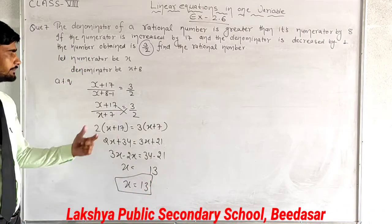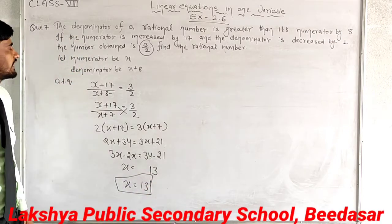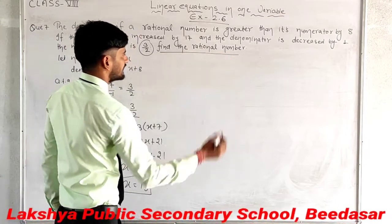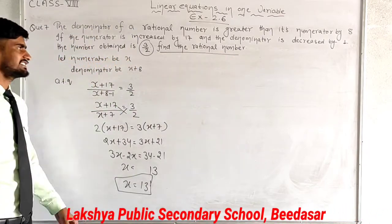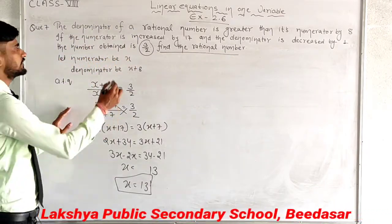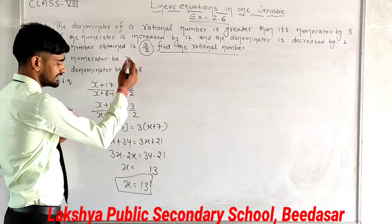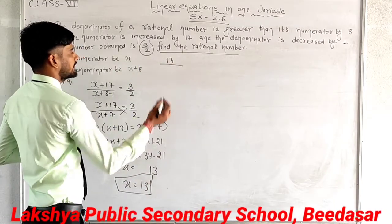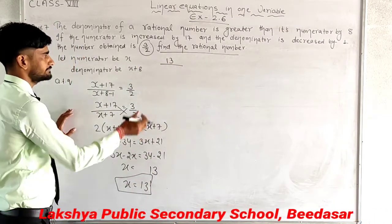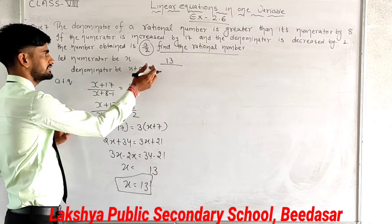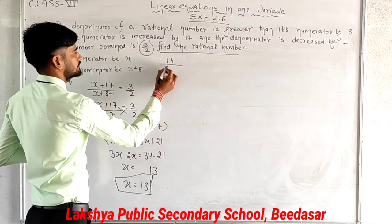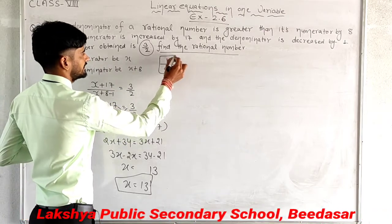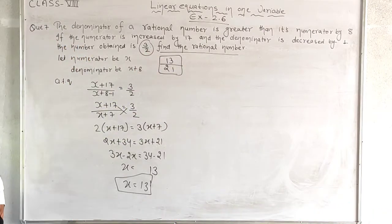We have found x equals 13. But don't stop here — the question asks to find the rational number. The numerator is x, which is 13. The denominator is x plus 8, which is 13 plus 8 equals 21. Therefore the rational number is 13 upon 21.